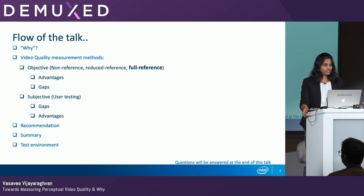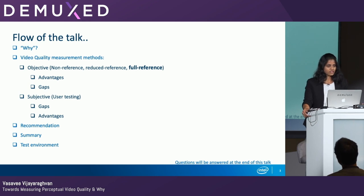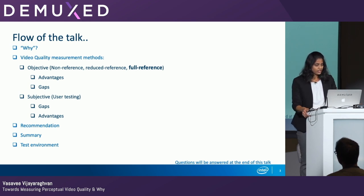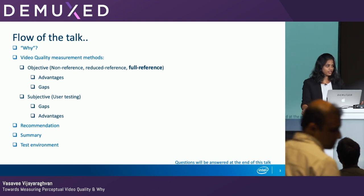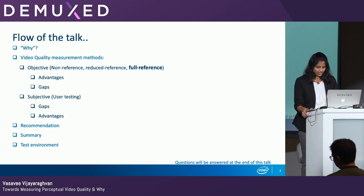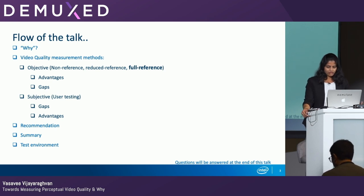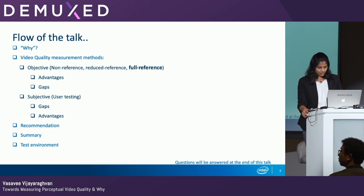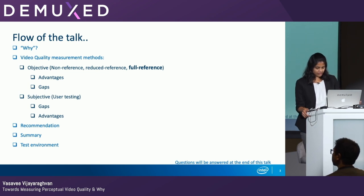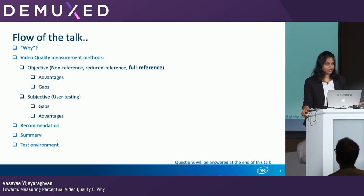SVT HEVC, which is a Scalable Video Technology HEVC encoder, is the encoder I've used for all of my analysis in this presentation. SVT HEVC is Intel's HEVC-compliant open source software encoder that achieves excellent density-to-quality trade-off and is highly optimized for Intel Xeon Scalable and Xeon D platforms. There are about 13 quality density levels available with this software encoder, and it's available in both subjective and objective modes. It's all open-sourced and available on the Git page.